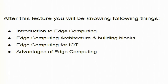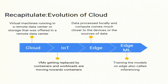Around edge computing, we are going to introduce you in this particular lecture, which is an essential building block in this course. To recapitulate what we have covered so far is the evolution of cloud. Four different concepts are related with each other and linked with the cloud. We introduced the cloud first and informed you that the classical cloud provides the concept of a virtual machine, which is nothing but Infrastructure as a Service.